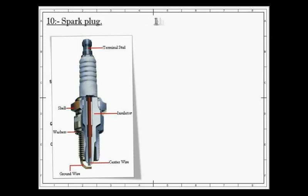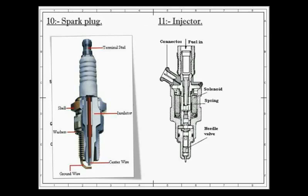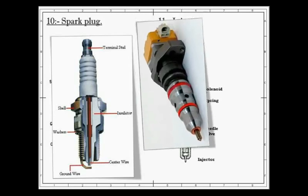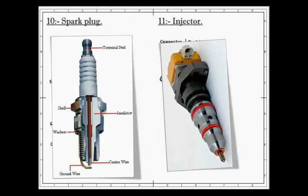Next is injector. They are usually used in compression ignition, that is CI engine. It sprays the fuel into combustion chamber at the end of compression stroke. It is fitted on cylinder head.